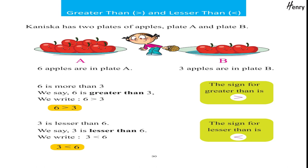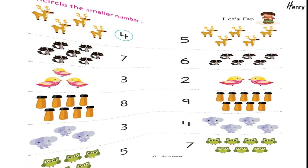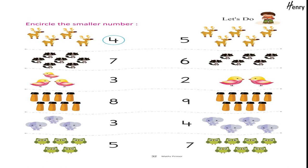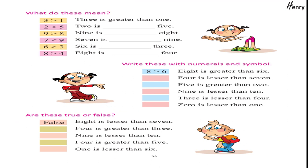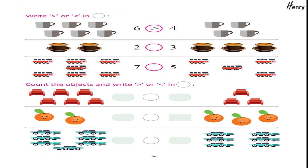Three is lesser than six — we say three is lesser than six. We write: three lesser than six. The sign for lesser than is '<'. Let's do: encircle the greater number. Let's do: encircle the smaller number. What do these mean? Write these with numerals and symbol. Are these true or false? Write greater than or less than in the circle. Count the objects and write greater than or less than in the circle.